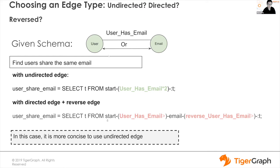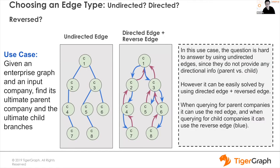Here's an example of why undirected edges can make your query easier. Say I want to find users who share the same email — the traversal path would be: user → email → user, two hops. If we define the edge between users and email as an undirected edge, the query can be pretty concise. However, if you use a reverse edge, you always have to think about direction: starting from the user going to the email I use one type, then starting from the email going back to the user I use another type. That makes query writing more complex.